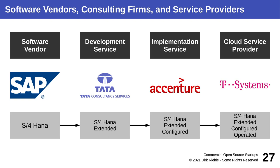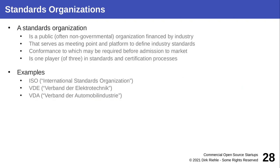These things need to come together before any value is generated from the enterprise software. If you don't have all four parts, there is nothing you gain. That is why in the software industry, product companies like SAP and consulting firms like Tata and Accenture coexist nicely — they need each other, or there would be no business.